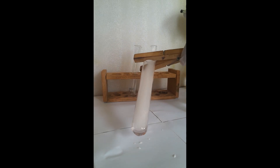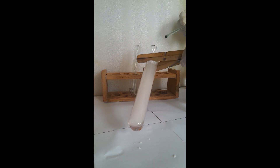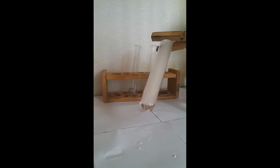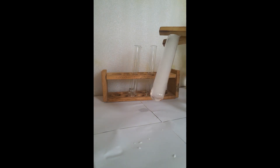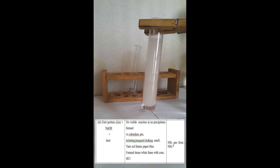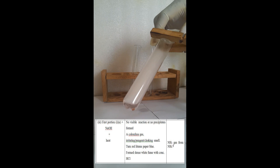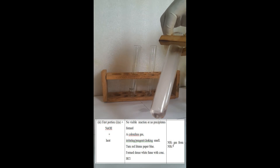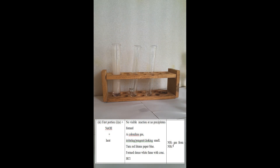So how do I record it on my table? Under test: portion plus sodium hydroxide plus heat. Observation: a colorless gas with a choking, pungent, or irritating smell, which turns red litmus paper blue and forms a dense white fume with concentrated HCl. Inference: confirms the presence of ammonia gas, NH3.